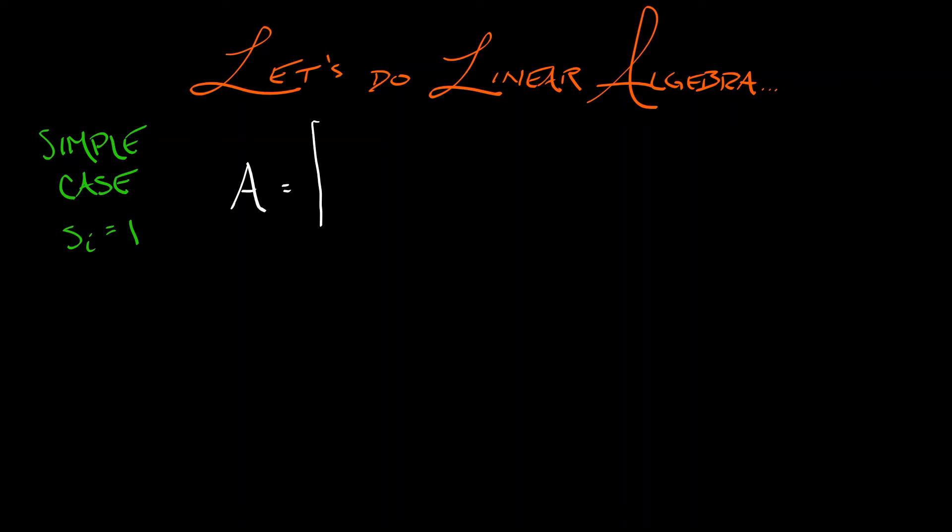So let's do some linear algebra. Let's take that Leslie model that we looked at and reduce it down to the simple case where the survival rates are all equal to 1. This gives us a matrix A of the following form.